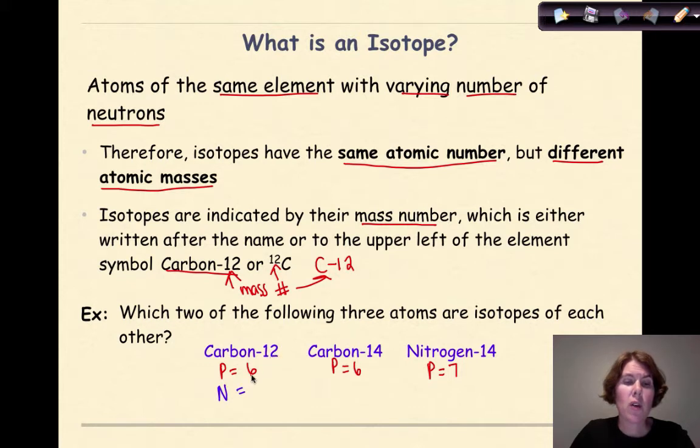For Carbon-12, 12 minus 6 will give me 6 neutrons. For Carbon-14, number of neutrons, 14 minus 6 gives me 8. And finally, for Nitrogen-14, 14 is my atomic mass, I have 7 protons, therefore my number of neutrons must also be 7.